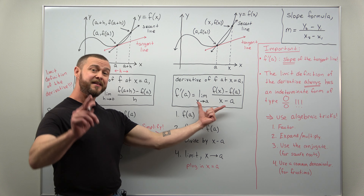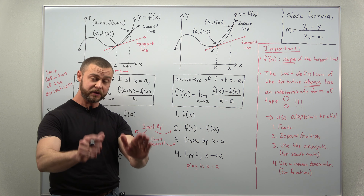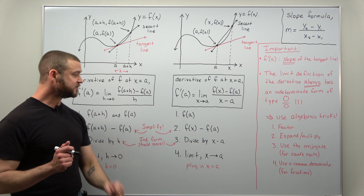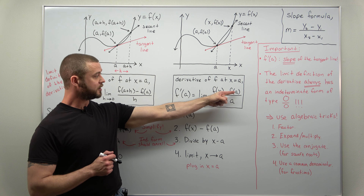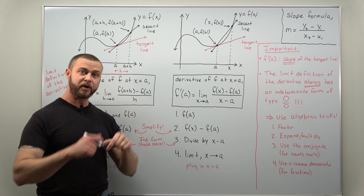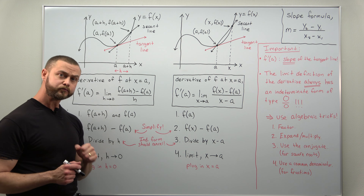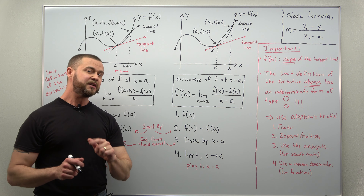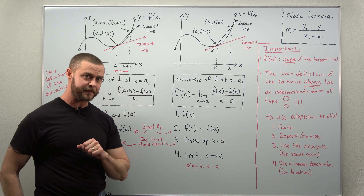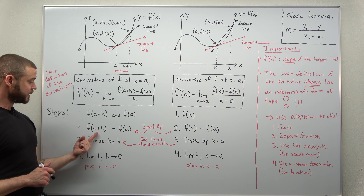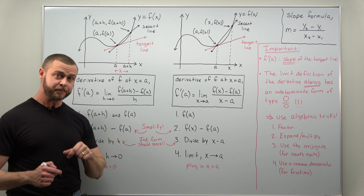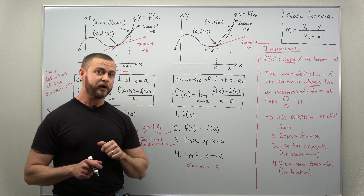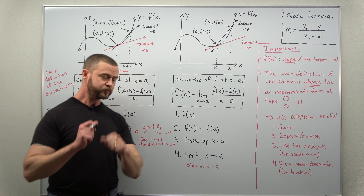Now for the equivalent second limit definition — you should always get the same answer regardless of which definition you apply. Step one: calculate f of a by taking your function and plugging in the value for a, which is a number. Step two: calculate the numerator, which is again a difference. Most of your work in this definition will be in factoring rather than expanding, compared to the first definition where most work is in expanding and multiplying out a plus h.